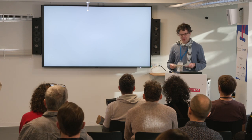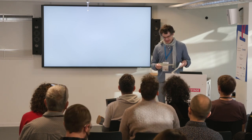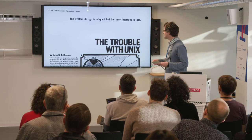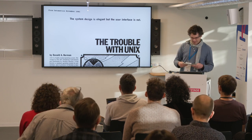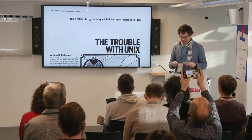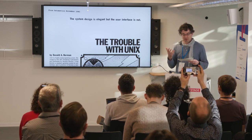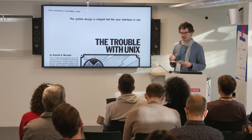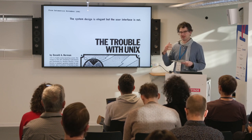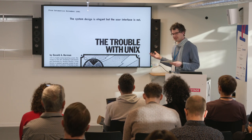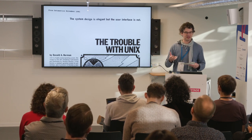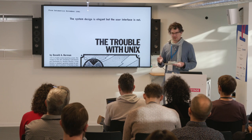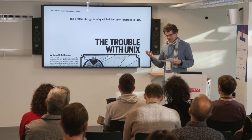Let's go back 40 years to 1981. The document is called 'The Trouble with Unix: The System Design is Elegant but the User Interface is Not,' written by Don Norman, a cognitive psychologist who would later become one of the best-known proponents of UX design. He attributes the problems users have with Unix — including psychology students using the system for statistics at universities — to the fact that programs don't give feedback; they are kind of silent.